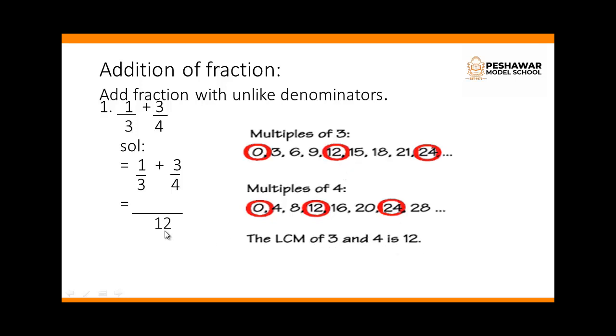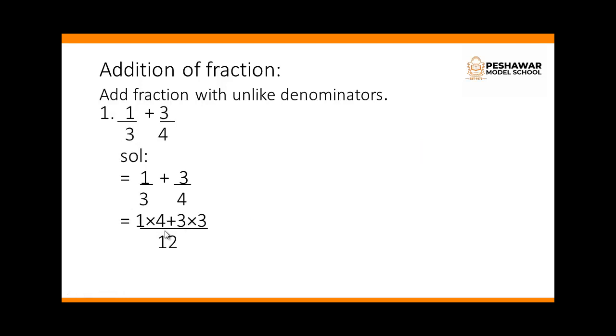So we write 12 in the denominator. Now we have to read the table of 3 to where 12 comes. Because in the first Fraction the denominator is 3, so we read the table of 3. 3 fours are 12, so we multiply the numerator with 4.